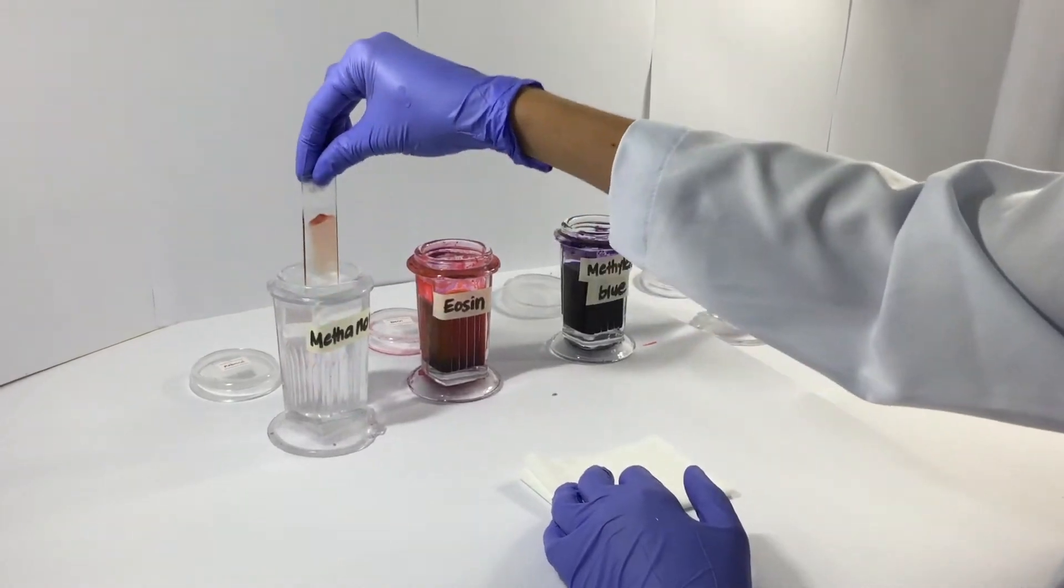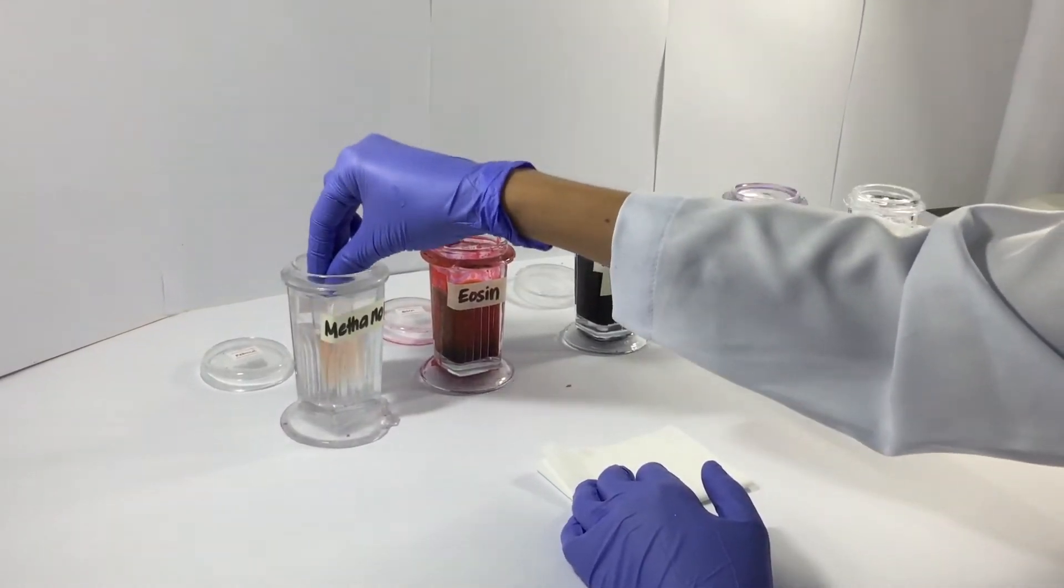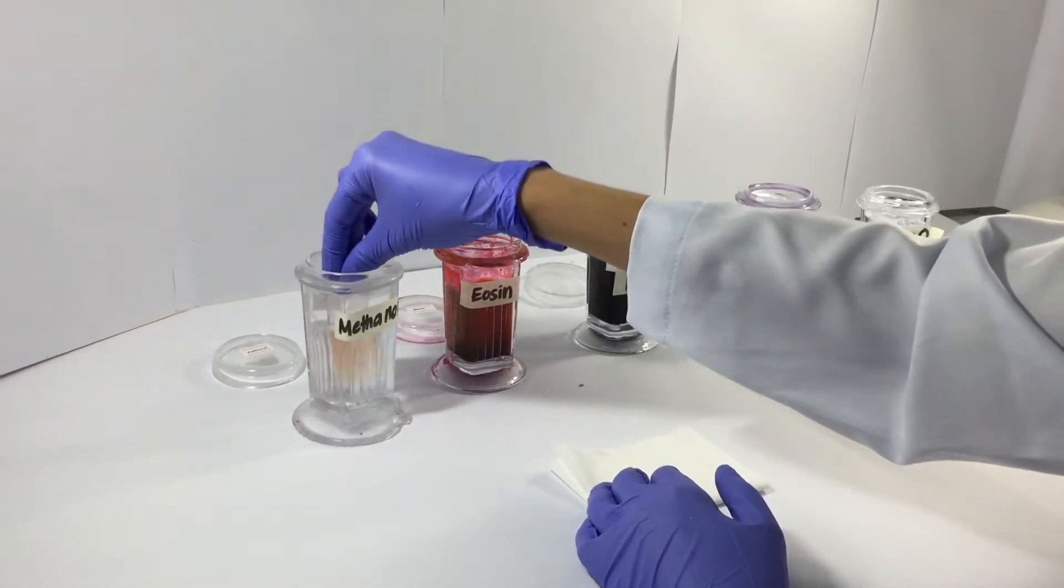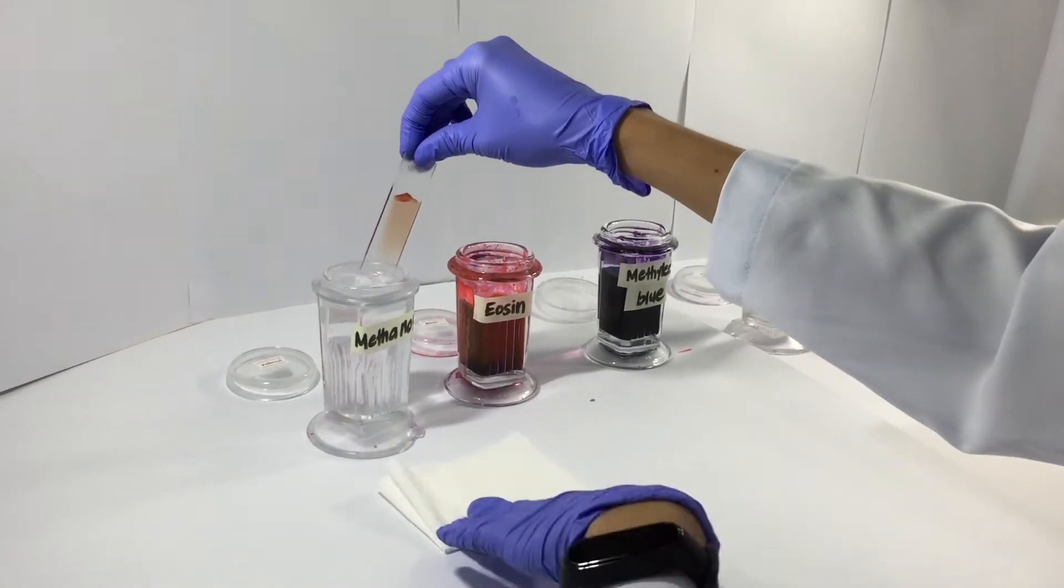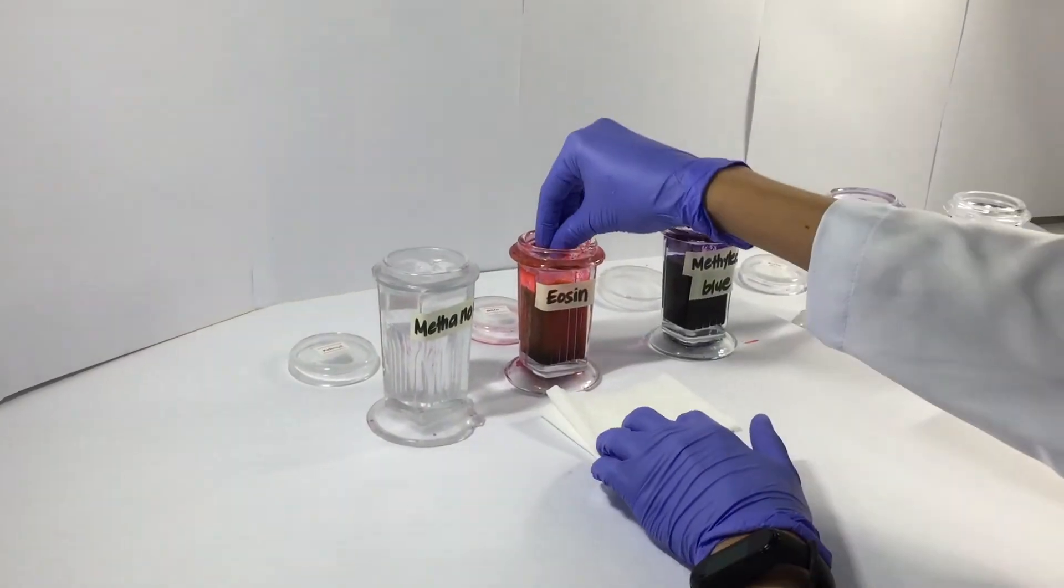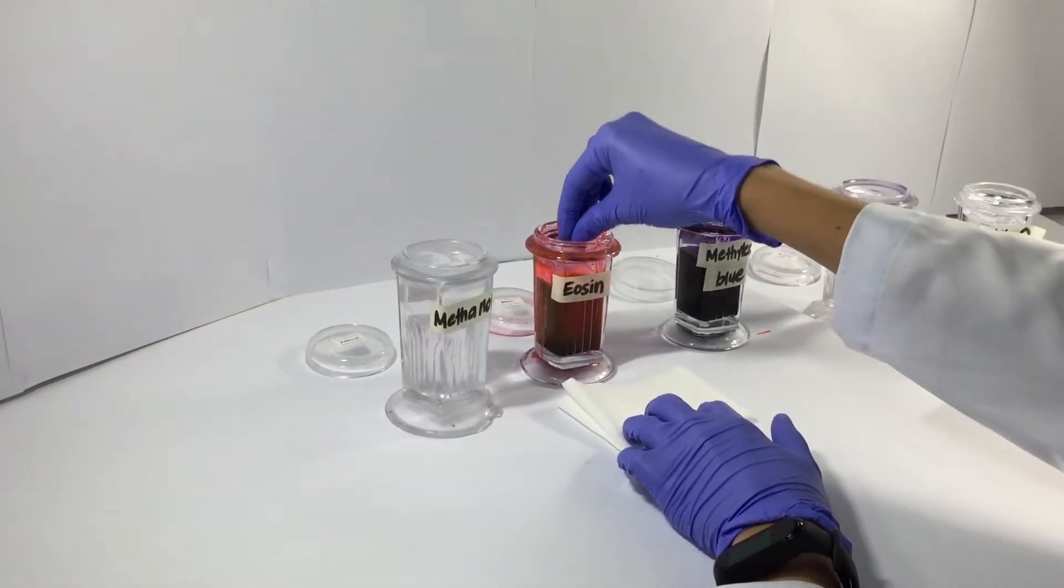Make sure your smear is completely dry before you start the staining process. When you begin, you dip it first in methanol for 30 seconds. This forces the cells to be fixed onto the slide.